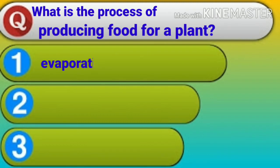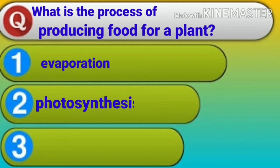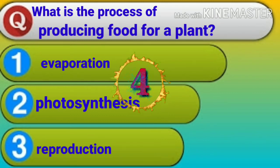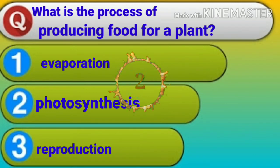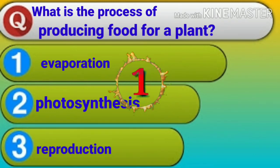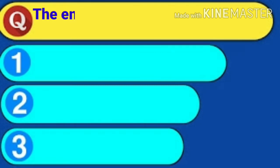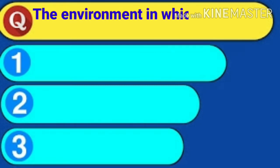What is the process of producing food for a plant? Number one: evaporation. Number two: photosynthesis. Number three: reproduction. You have five seconds to try yourself. The answer is photosynthesis.